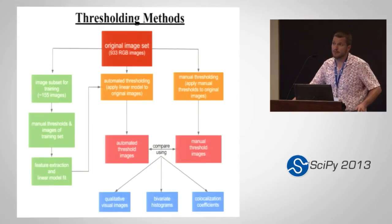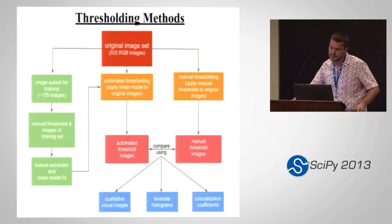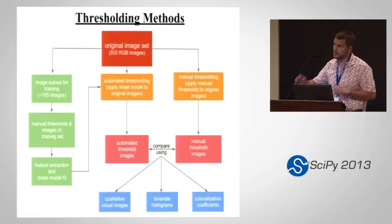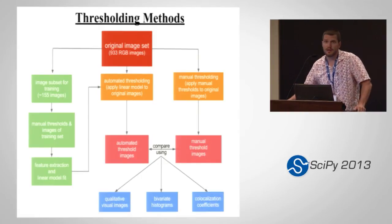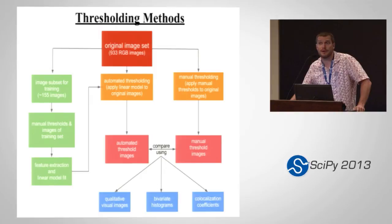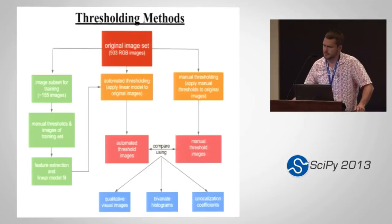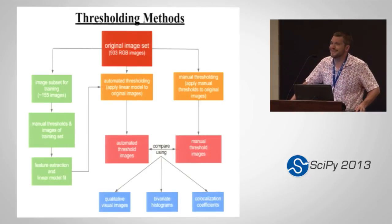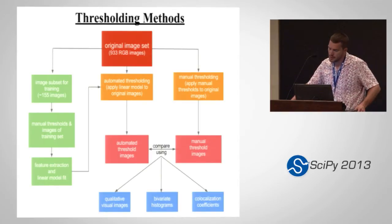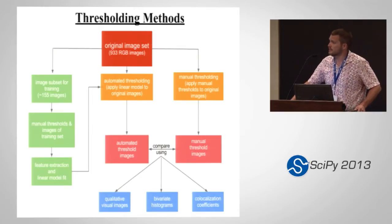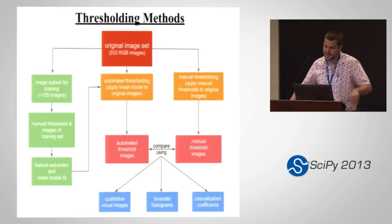We developed a very small simple linear regression model from a subset of the images. We had six replications, so we took one replicate for each condition and did it by hand — more to the point, my colleague did that — which gave us a nice training set. With that training set we developed a linear model, doing some feature extraction going from images to thresholds, and came up with a pretty good model. Then we realized we needed to validate it, so we manually thresholded the remaining images as a test set.